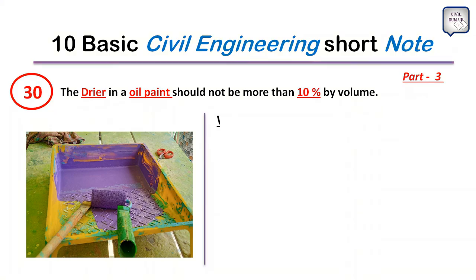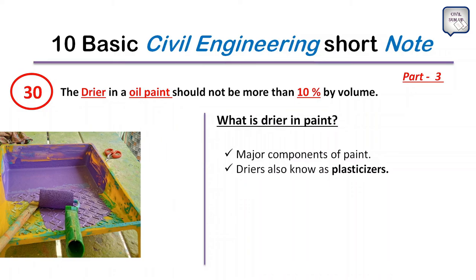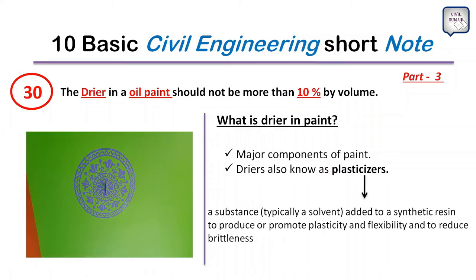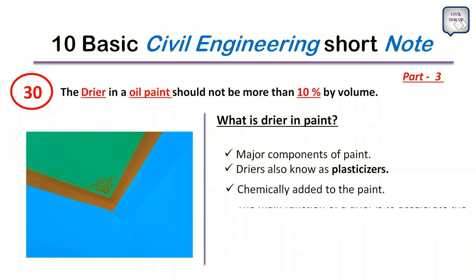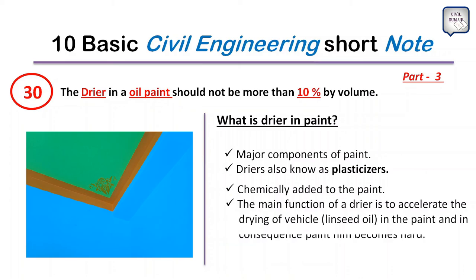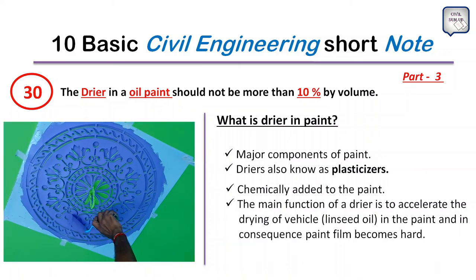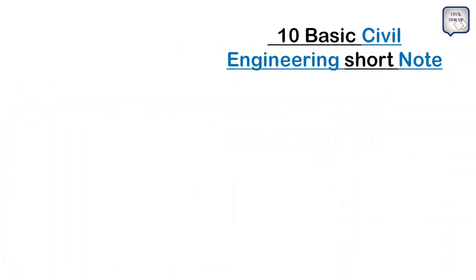Point 30: Dryer is a major component of paint. Dryers are also known as plasticizers — substances typically added to a synthetic resin to promote plasticity, flexibility, and reduce brittleness. Dryers are chemically added to paint, and their main function is to accelerate the drying of the vehicle (linseed oil) in paint so the paint film becomes hard.